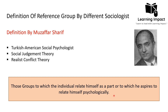It should be a group to which individuals can realistically relate themselves psychologically — not a hypothetical group beyond their reach. For example, someone from a lower class may not currently relate to the elite class, but if they work hard, earn enough, and then relate psychologically to that group, then that group acts as a reference group for them.